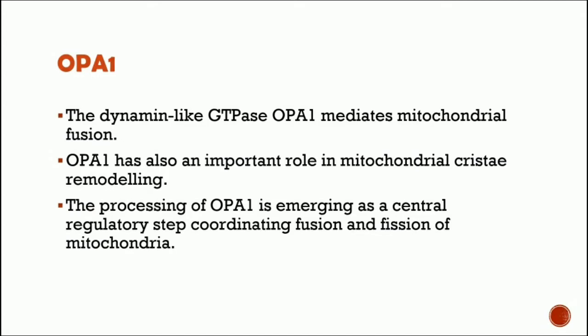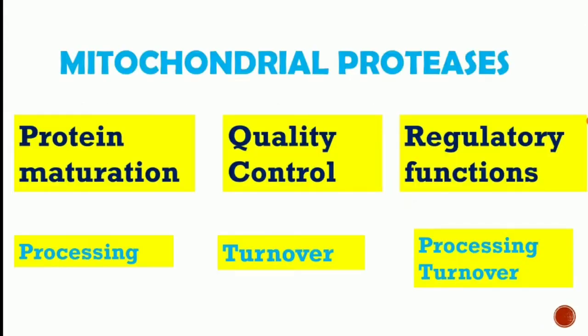Now we will discuss mitochondrial proteases and their role in mitochondria. Mitochondrial proteases play an important role in protein maturation, processing newly formed proteins by cleaving their signal sequences. Mitoproteases have important roles in quality control as well as important regulatory functions during mitochondrial biogenesis. These proteases recognize specific proteins with regulatory functions and preserve both the biogenesis and maintenance of mitochondrial activities.